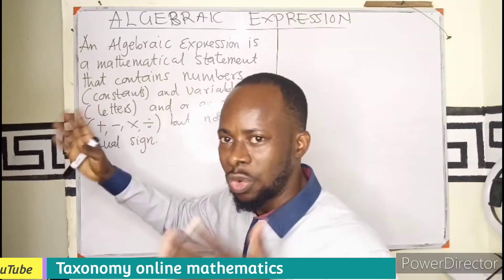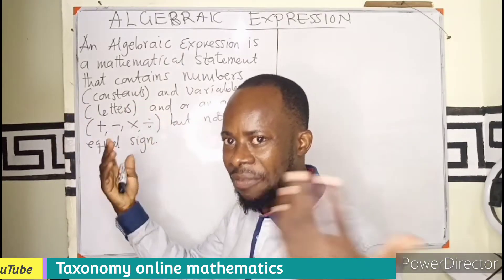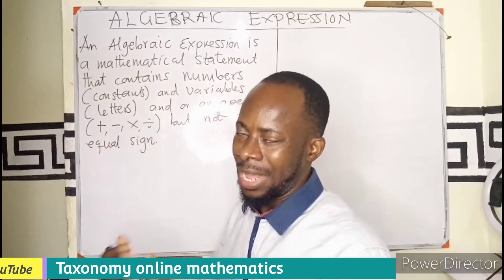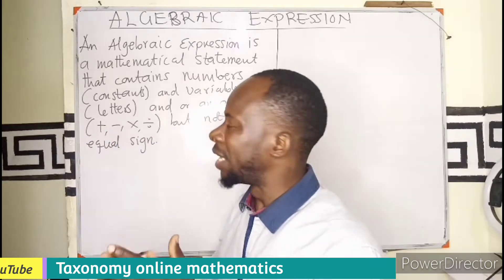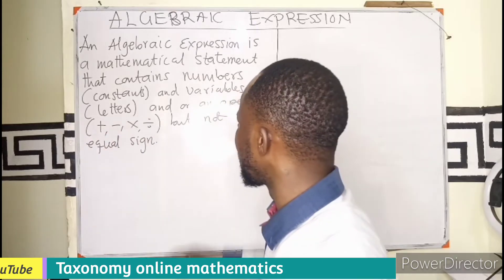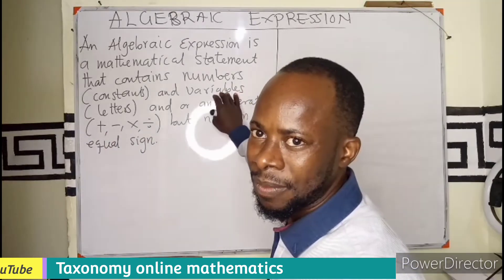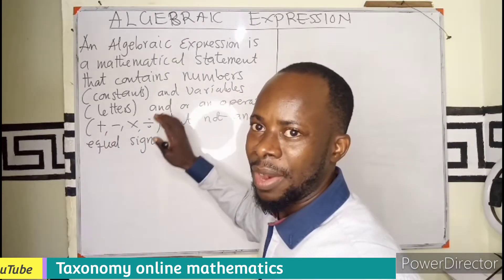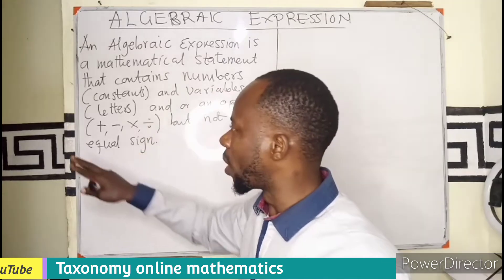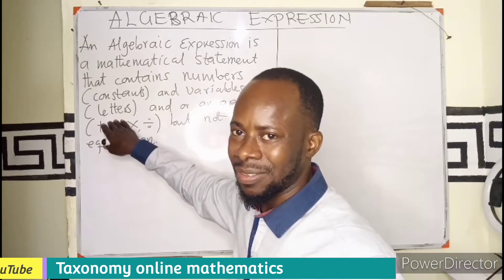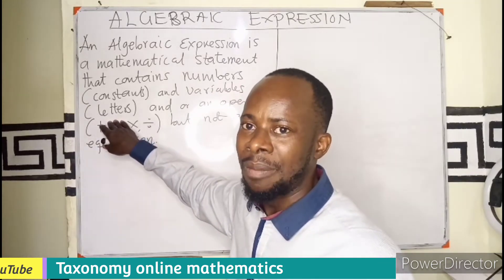One, two, three, four, five — these are the constants that we have. And a variable — when we talk of a variable, we are referring to the letters of the alphabet.